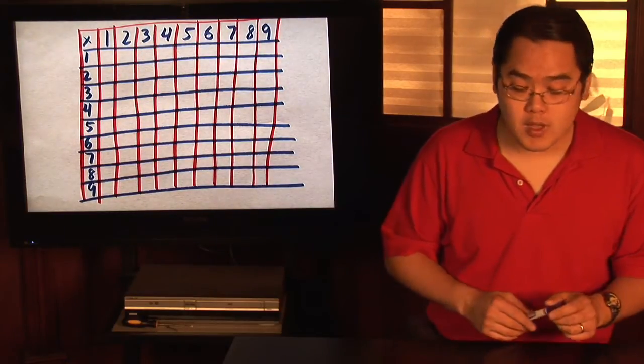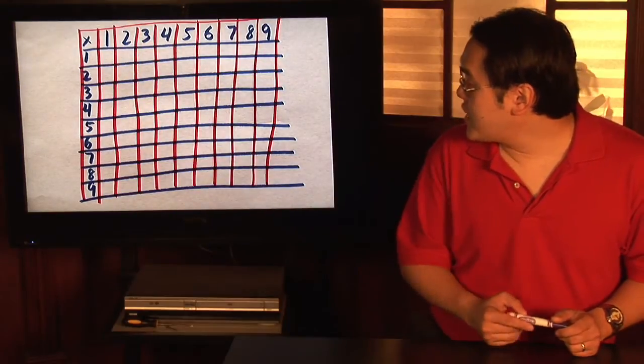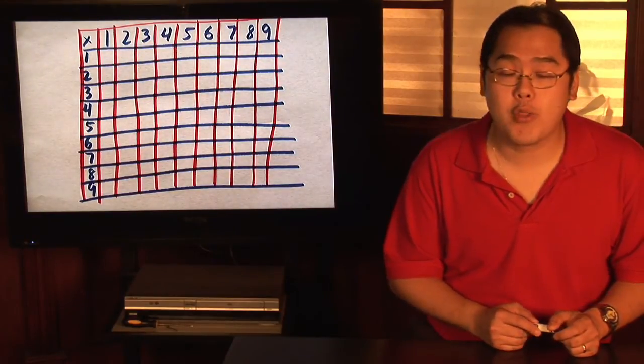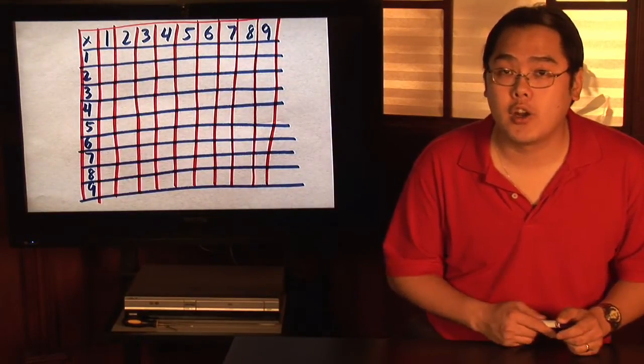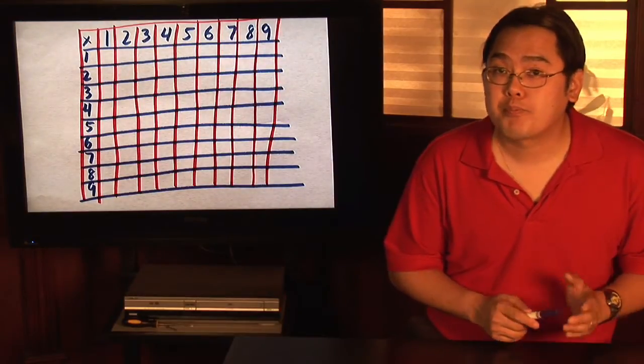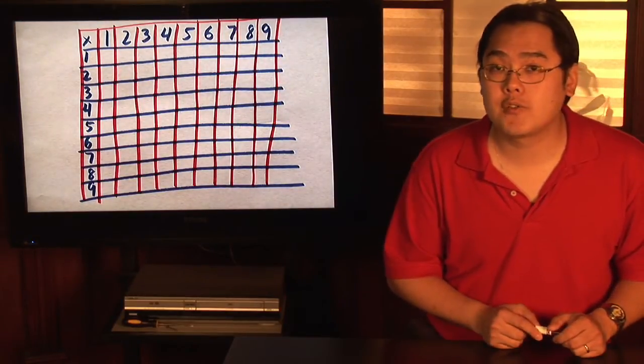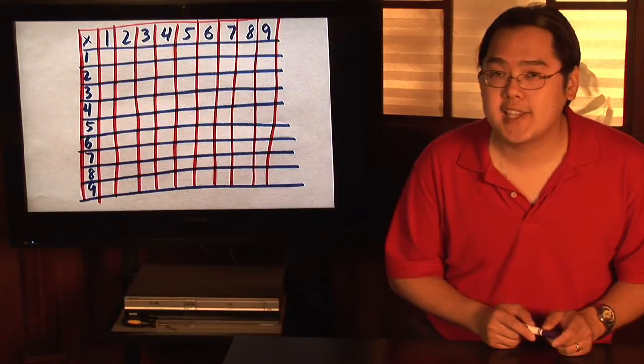So here we go. The basic multiplication table has the numbers one through nine. If you like you can also include the number ten, but include all the numbers as rows and as columns.